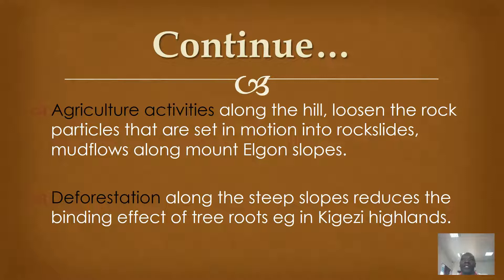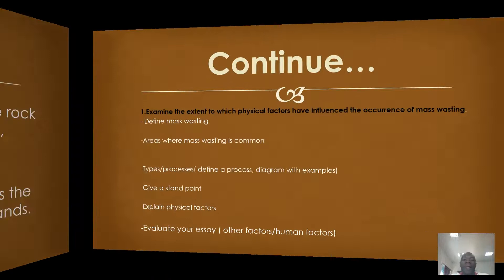The other human activity is deforestation along steep slopes, whereby trees are cut. The binding effect of trees is reduced. As a result, soils are left bare and loosened, and in case of any disturbance, the materials are set in motion downslope. For example, in Bugisu Highlands, because of the dense population, vegetation is cleared and the slopes are left bare and susceptible to any form of disturbance.